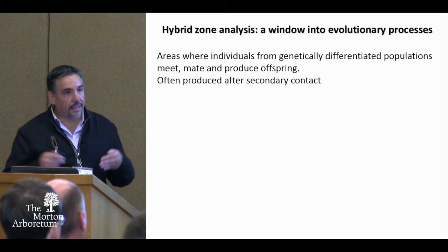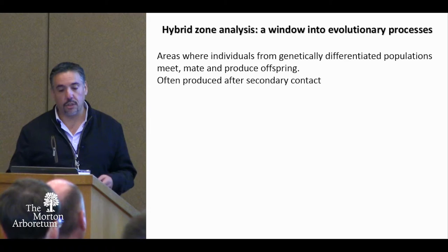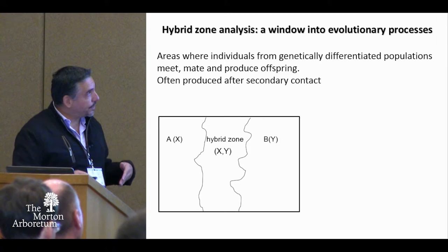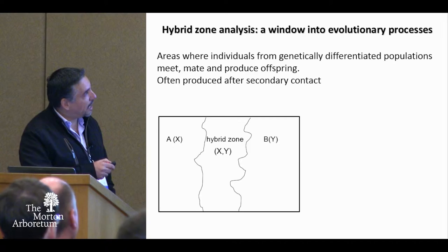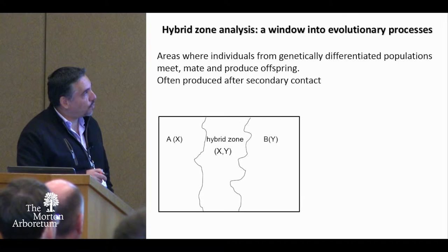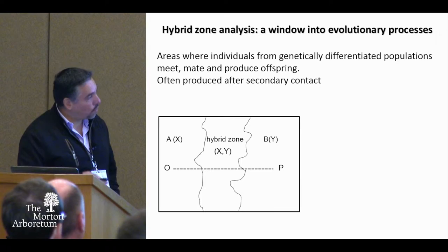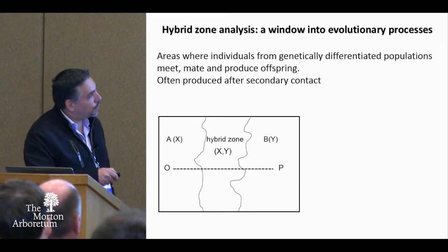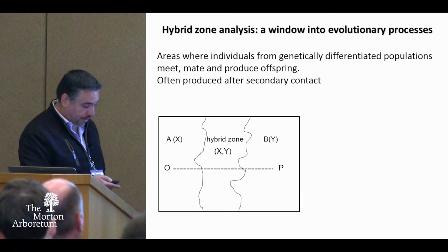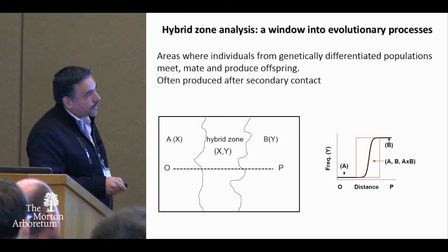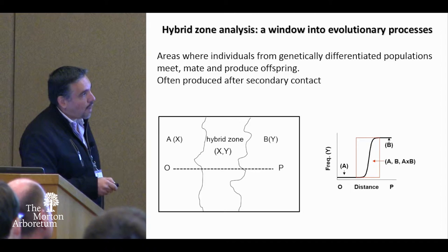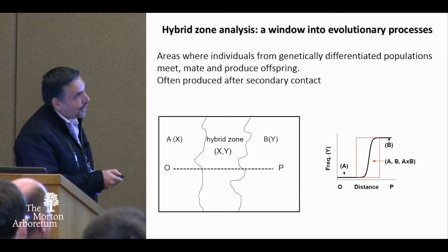Hybrid zones are usually produced after secondary contact of species or populations that have diverged previously under allopatric conditions. Imagine a hybrid zone between two species in secondary contact: species A has character X, species B has character Y, and the hybrid zone is where you see both characters. To analyze this hybrid zone, one can draw a transect from species A to species B across the hybrid zone and record the frequency of one of the characters. What you will see is a cline — a gradual transition with a sigmoid shape.